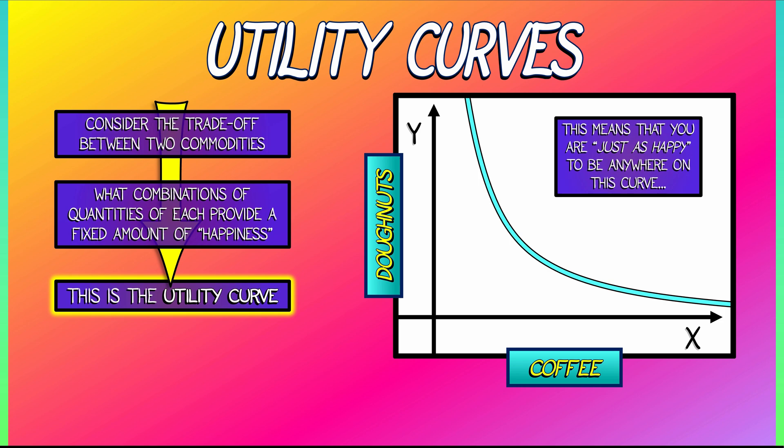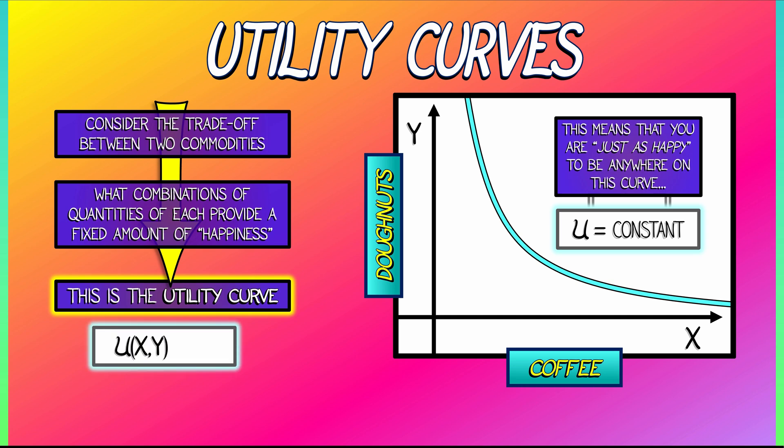Now that's what it looks like graphically. What does it mean analytically? Analytically, there's some function U that is constant along this curve. This utility function U is interesting. It depends on two variables, X and Y. And what we're doing is we're taking that function, that multivariate function, and setting it equal to a constant.